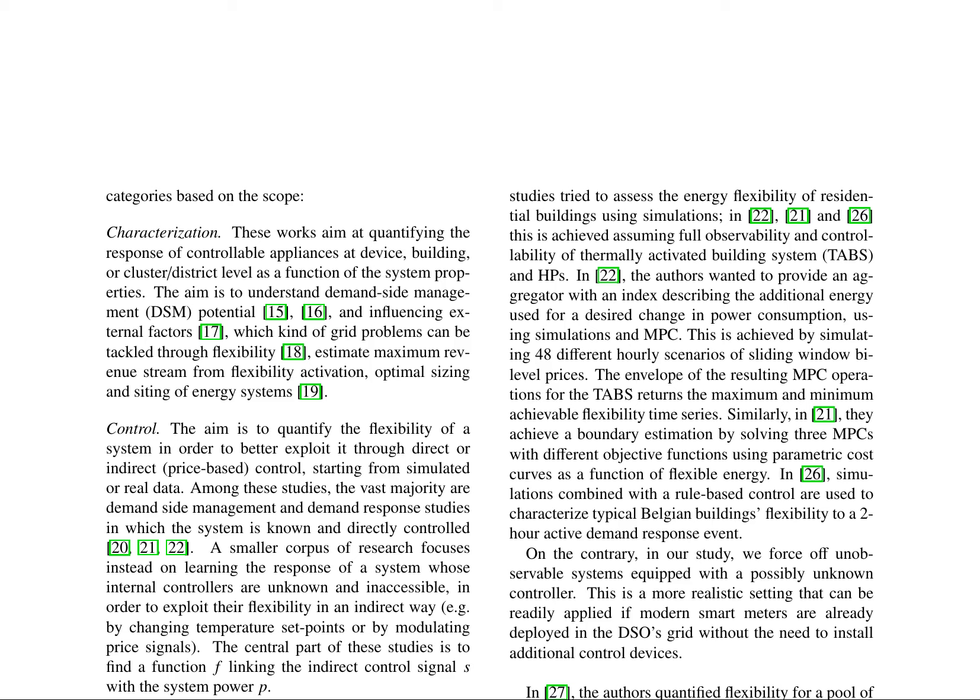Research in energy flexibility is divided into two primary areas: characterization and control. Characterization seeks to quantify the response of controllable appliances at various levels as a function of system properties, understanding demand-side management potential, and estimating maximum revenue streams from flexibility activation. Control focuses on quantifying flexibility to better exploit it through direct or indirect control, using simulated or real data.